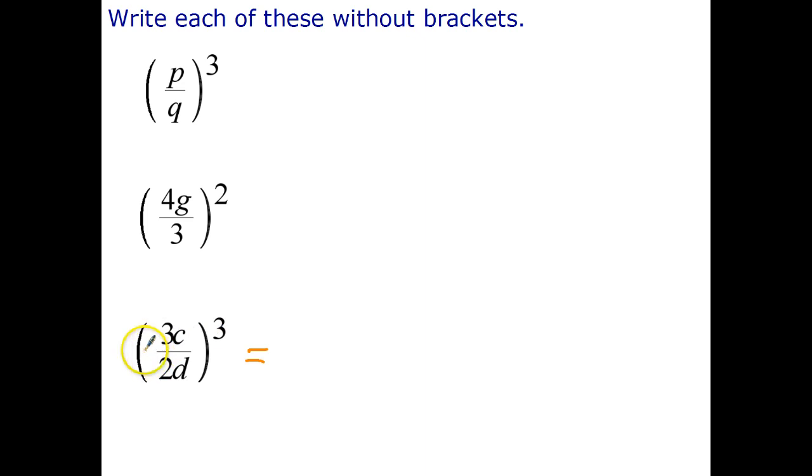So index law number five says we can write that as 3c all to the power of three over 2d all to the power of three. I got rid of the large brackets surrounding the quotient. I still have brackets because I have to raise all of that to the power of three. So now we can use the previous index law and say that's going to be 3 to the power of 3, c to the power of 3 over 2 to the power of 3, d to the power of 3.